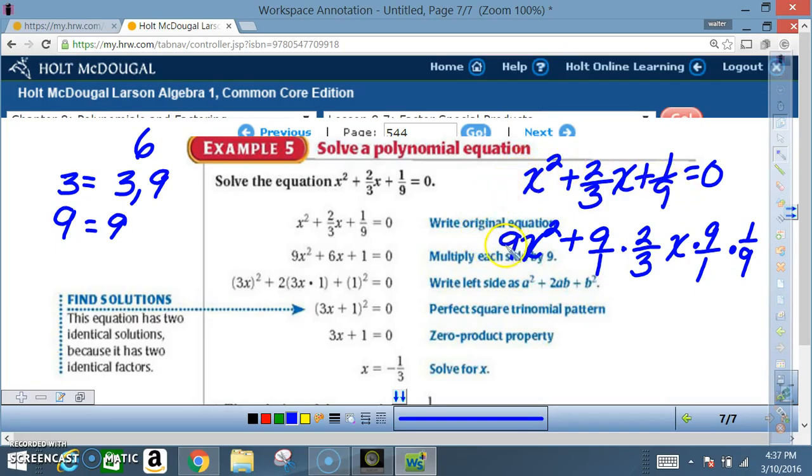So x squared gets multiplied by nine. Two thirds x gets multiplied by nine. I wrote it as nine over one so it'd be easy for you to understand.